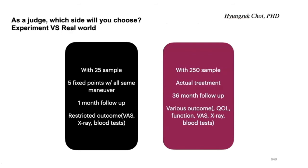With 25 samples, five fixed points with all the same maneuver, one month follow-up, very objective quantifiable outcomes like x-rays and blood tests — versus 250 samples, actual treatment with all different acupuncture points, three years follow-up, and various outcomes like how happy you are. Which one will you choose?